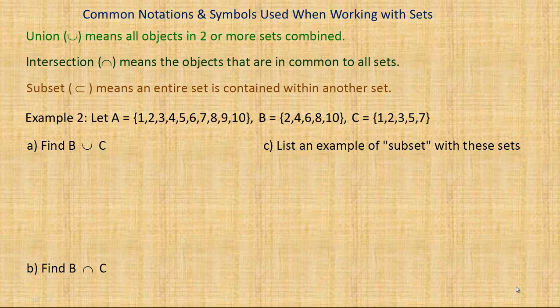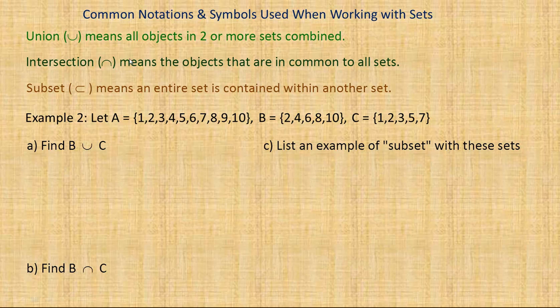On the second page, I'll talk about three common symbols used when working with sets — groups of numbers or objects. The first looks like a capital U and stands for union, meaning all objects combined across two or more sets. The upside-down version is the intersection symbol, meaning objects common to all of the sets. And a sideways version of that is the subset symbol, used when one set is entirely included within another set.